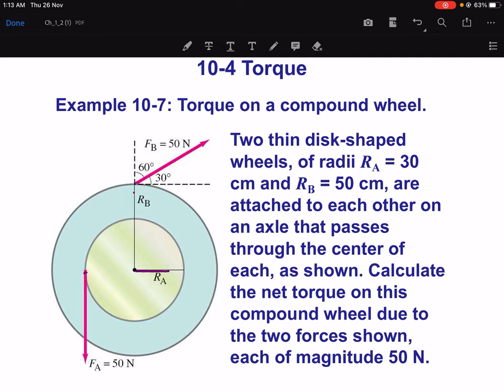Two thin disc-shaped wheels of radius R_A is 30 cm and R_B is 50 cm are attached to each other on an axle that passes through the center of each as shown in the picture. Calculate the net torque on this compound wheel due to the two forces shown, each of magnitude 50 Newton.